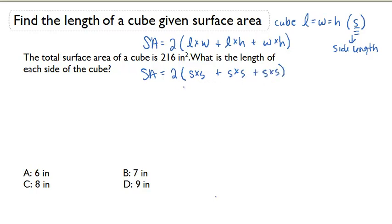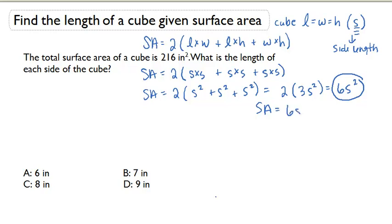Since I can write S times S as S squared, I'm going to have 2 times S squared plus S squared plus S squared, which is just 2 times 3S squared, which is 6S squared. That's the surface area formula for a cube. Surface area equals 6S squared.